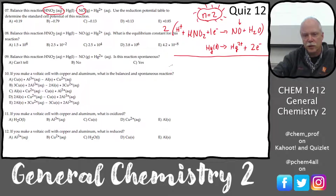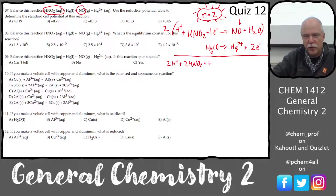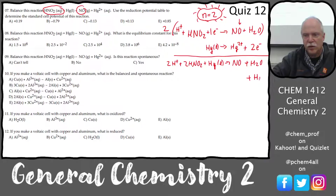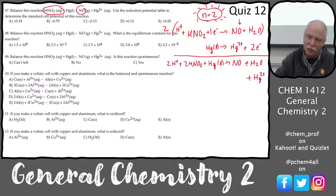So the balanced overall reaction is: 2H⁺ + 2HNO₂ + Hg liquid → [products] + 2H₂O. That's our balanced redox reaction.